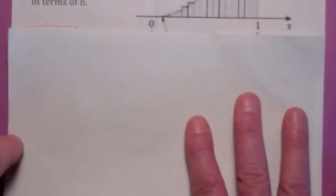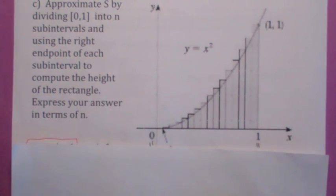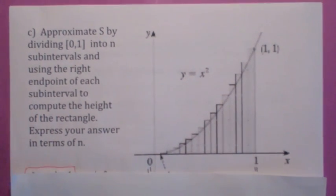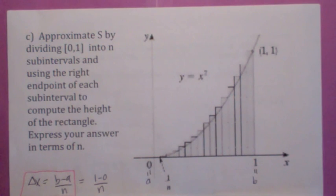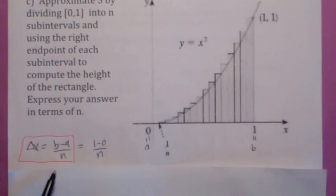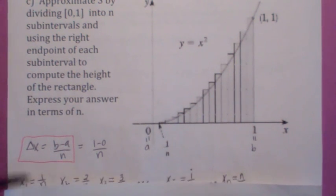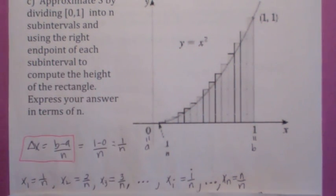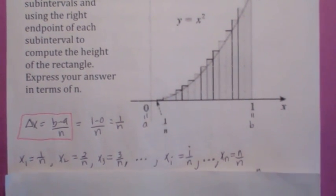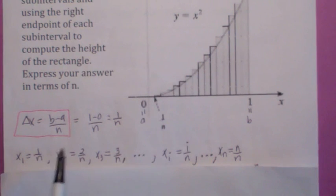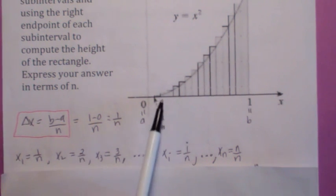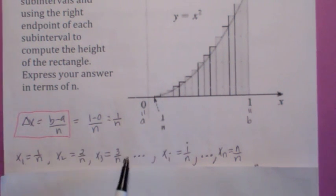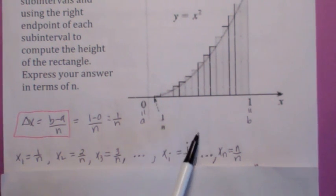We're almost ready to define the area in general. Let's approximate the area under y equals x squared from 0 to 1 using n rectangles. Delta x, the width of each rectangle, becomes 1 minus 0 over n, which we just leave as 1 over n. If we use the right endpoint to compute the height, the right endpoint of the first rectangle is 1 over n, for the second it's 2 over n squared — meaning the height is 2 over n quantity squared — and for the i-th rectangle the right endpoint is i over n, so the height is i over n, quantity squared.